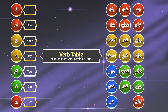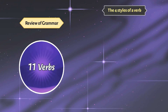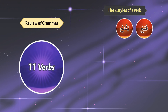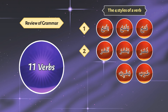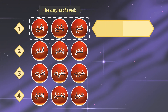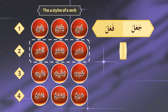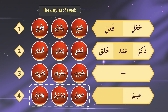We have also learned a short table representing three verb keys and three noun keys, and four styles of verbs. On the pattern of Fataha we learned Jaala and Faala. On the pattern of Nasara we learned Thakara, Abada, and Khalaqa. And on the pattern of Samia we learned Alima and Amila.